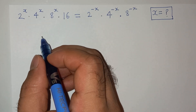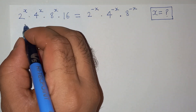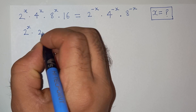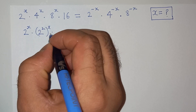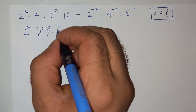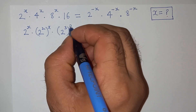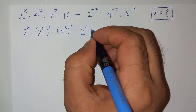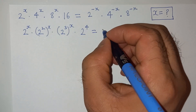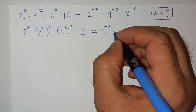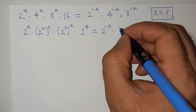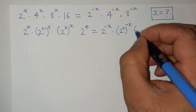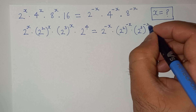How to solve this question? I am going to write this equation as 2 power x multiplied — 4 can be written as 2 squared power x, and 8 can be written as 2 power 3 power x, multiplied 16 can be written as 2 power 4, equals to 2 power minus x multiplied 2 squared power minus x and 8 can be written as 2 cube power minus x.